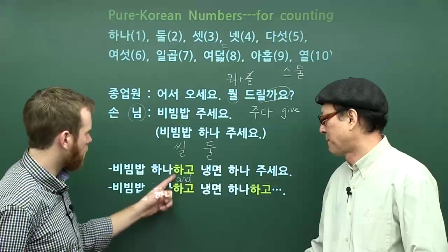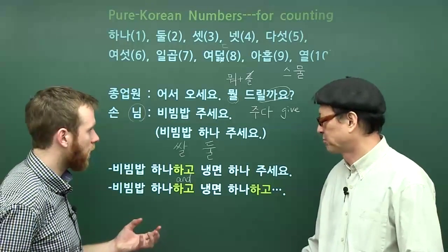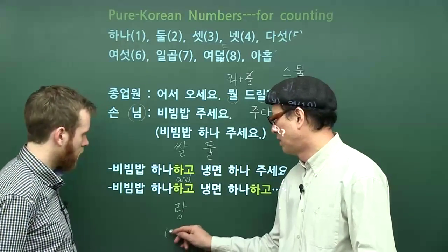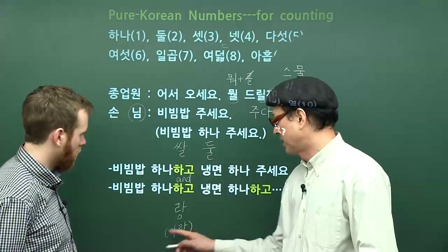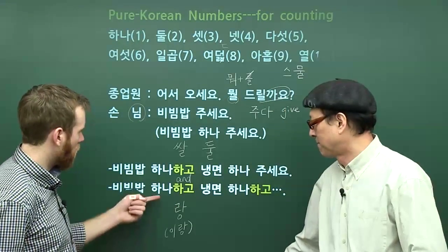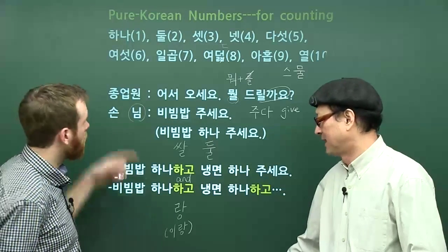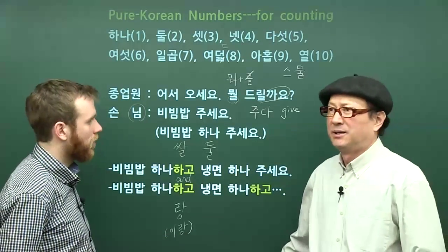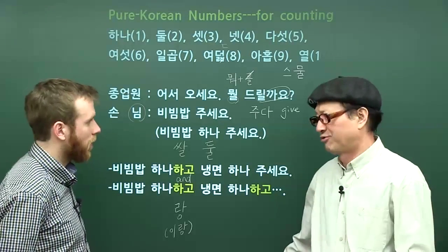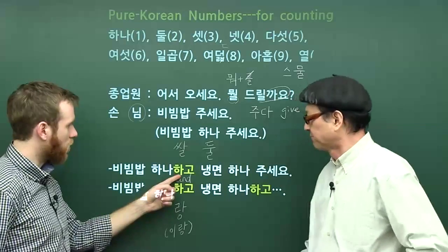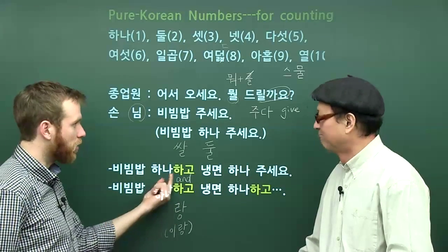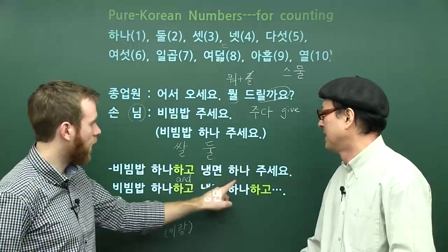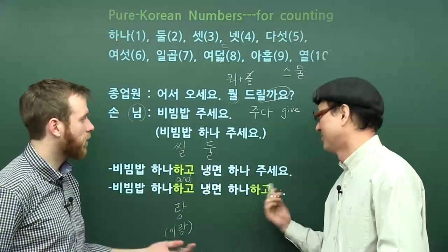We can also use other words for 'and.' 랑, or 이랑 if the word ends in a consonant. If I'm not ordering one but two, I have a consonant — 둘 — so it would be 둘이랑. For example: 비빔밥 둘이랑 냉면 하나 주세요. Same thing as 하고 — it's glued to the number with no space. So: 비빔밥 하나랑 냉면 하나랑 돈까스 하나 주세요.